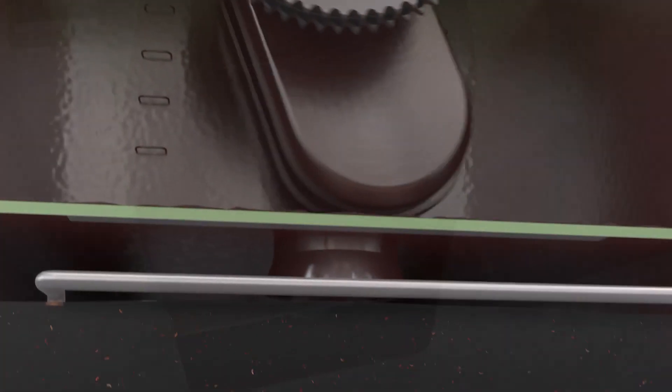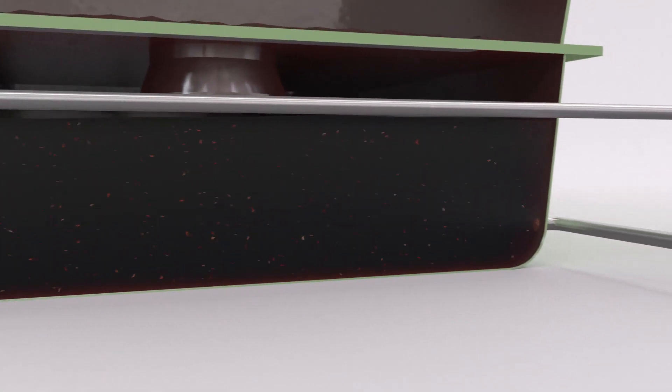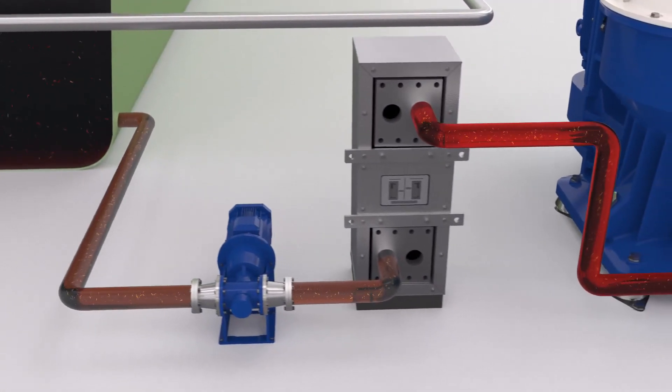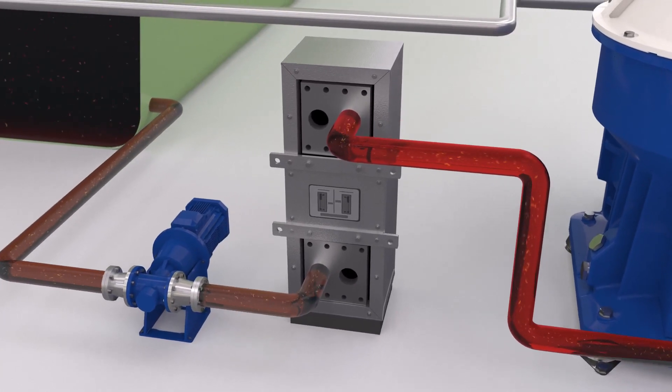Used lubrication oil from the engine makes its way to the sump tank and from here it is pumped through a small heat exchanger. Here the oil is heated before arriving at the separator.